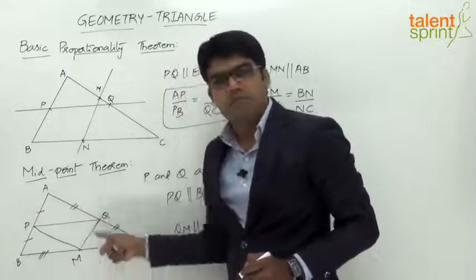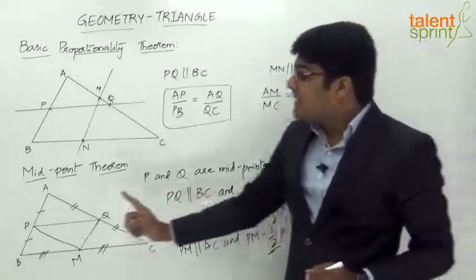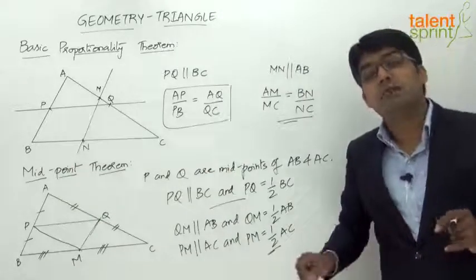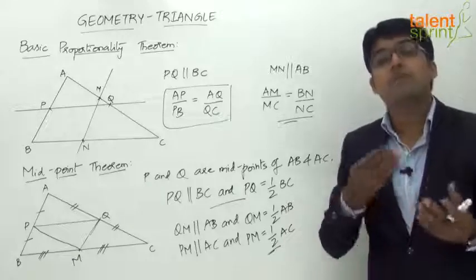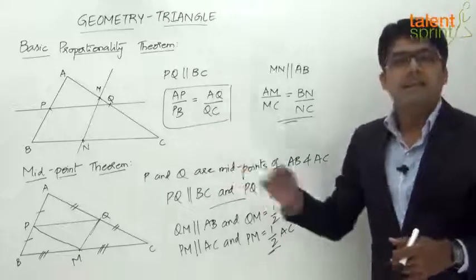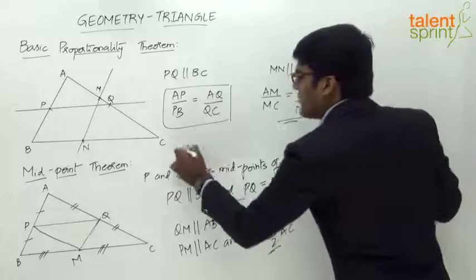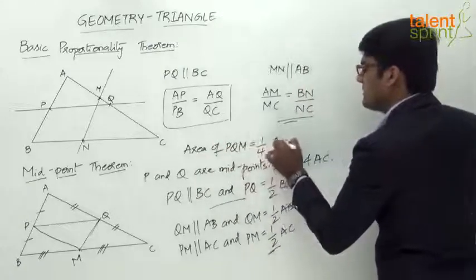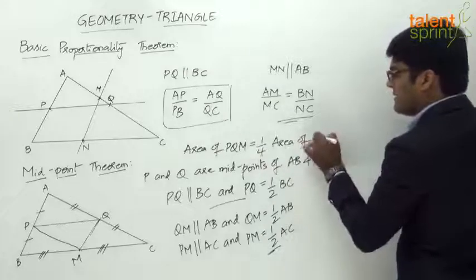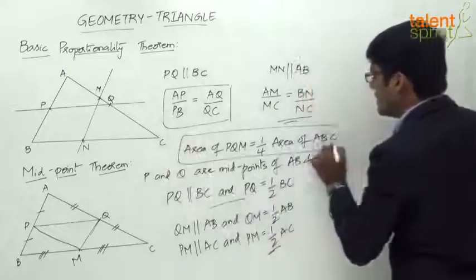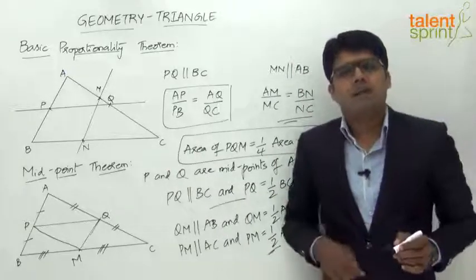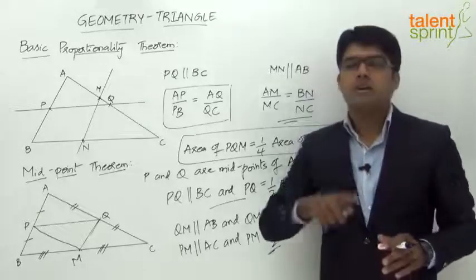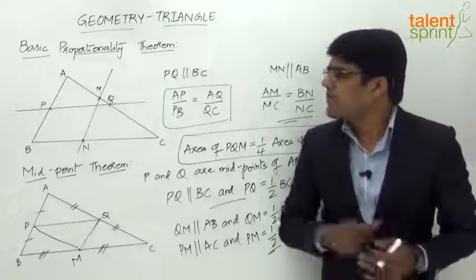The area of triangle PQM will be one fourth of the area of triangle ABC. This means the triangle obtained by joining the midpoints of the three sides will be one fourth in area of the original triangle. This is not the Midpoint Theorem itself, but an important conclusion: the area of triangle PQM = (1/4) × area of triangle ABC.